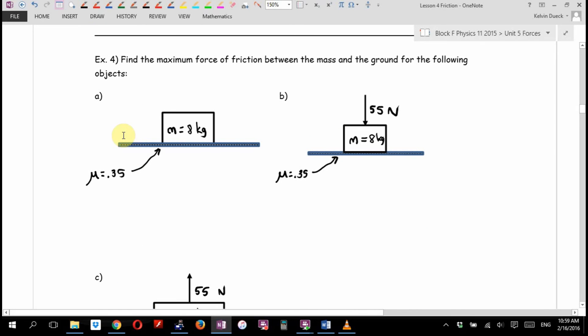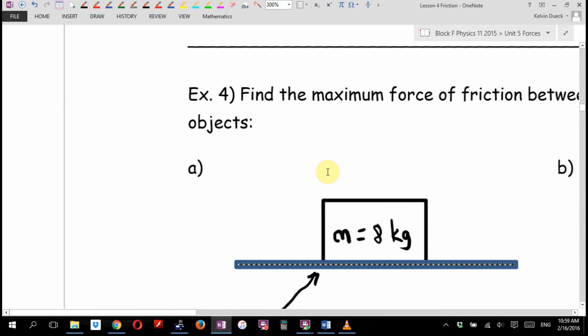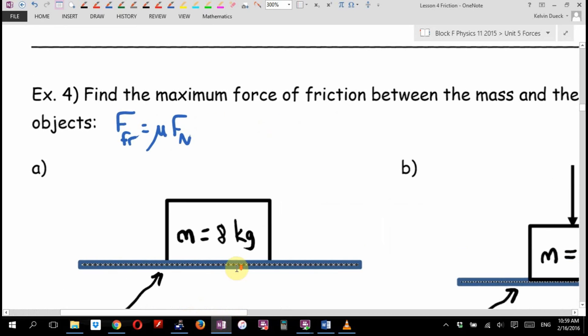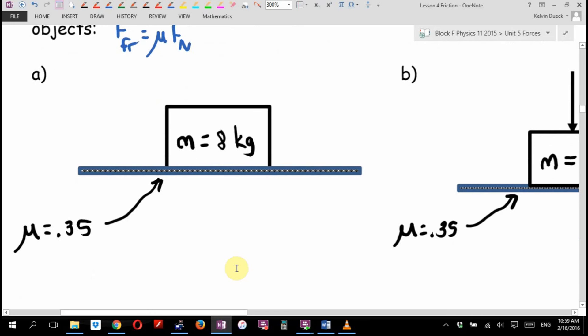Example four says, find the maximum force of friction between the mass and the ground for the following objects. Right here, let's write our new equation for friction. Friction equals mu times the normal force. And you can see in each question, I've given you mu with a little arrow. Usually I'll draw it pointing to the surface saying, this is how sticky these surfaces are in relation to each other. This is a job for a free body diagram. What are the forces acting on this mass? Gravity. Is this mass sinking into the ground like quicksand? Is it flying here like Superman? So there must be another force up. How big? The same size as mg. We call that the normal force.